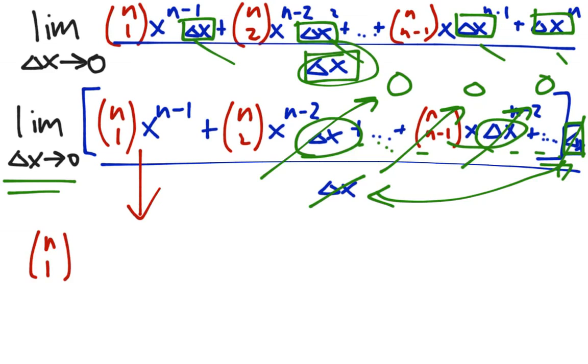which is n choose 1 times x to the n minus 1. Well, let's think about this. If you have 13 different elephants, and you want to choose one of them, how many ways of there doing that? Well, there's 13, because that's how many choices you have for one elephant. So in general, n choose 1 is simply n. And so this answer is simply n times x to the n minus 1,